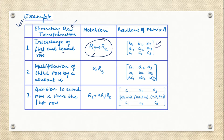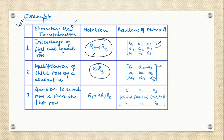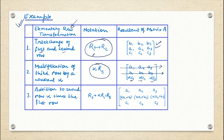The second operation is multiplication of the third row by a constant K — again, any row can be chosen. The first and second rows remain as they are. The third row is multiplied by scalar K, meaning K gets multiplied to each and every element in that entire row.